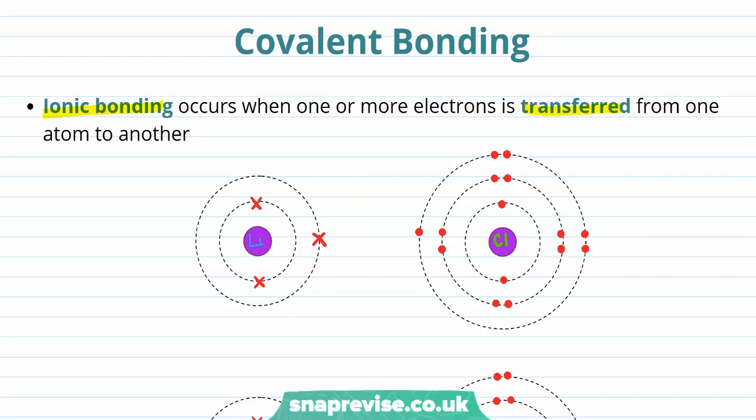On the right hand side, we have an atom of chlorine with its electrons also indicated. What we've drawn here is known as a dot and cross diagram, as the electrons on the lithium atom are indicated with crosses and the electrons on the chlorine atom are indicated with dots.